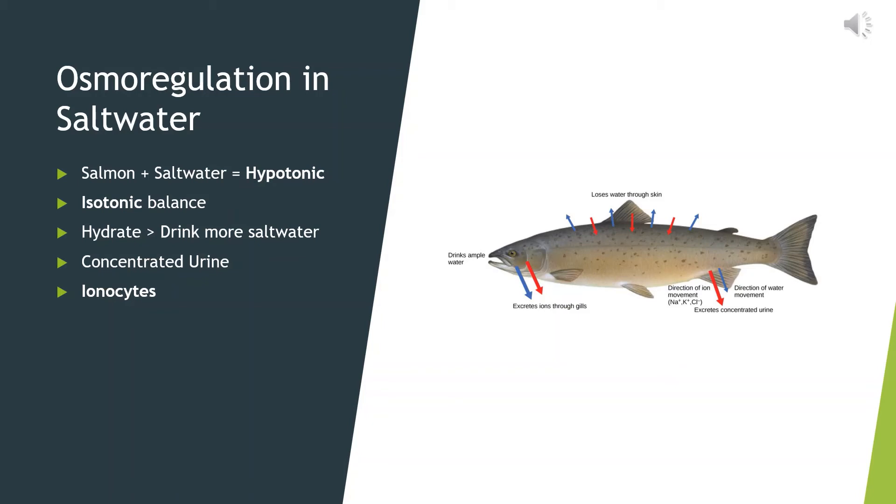In saltwater, the water would move out of the cell. This is an attempt to create an isotonic balance between the salmon's surroundings and the cell. This means that the concentration of salt and water are the same for both in the cell and the saltwater the salmon is in.